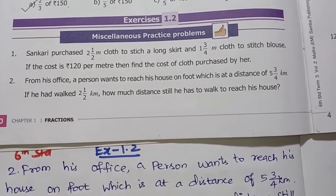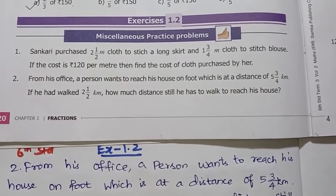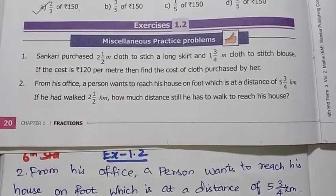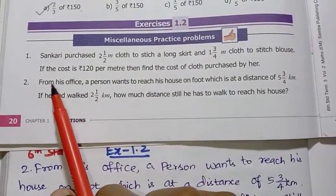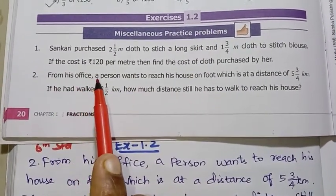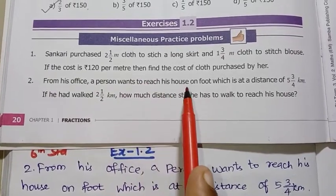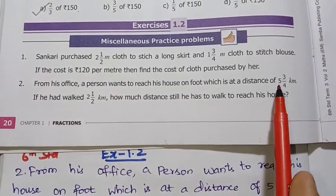Hi all, welcome to our channel Student Station. In this video, we're covering 6th standard Term 3 Fractions, Exercise 1.2, second problem. From his office, a person wants to reach his house on foot, which is at a distance of 5 3/4 kilometer.